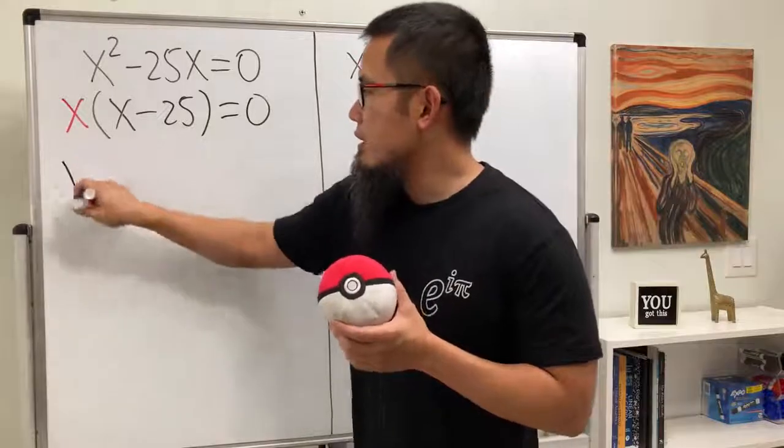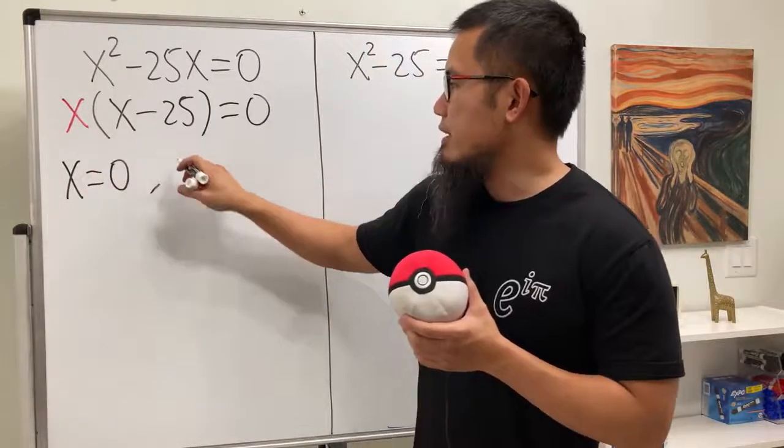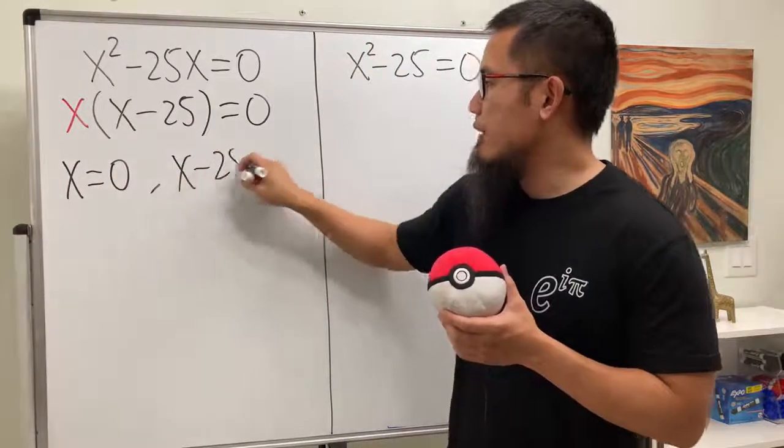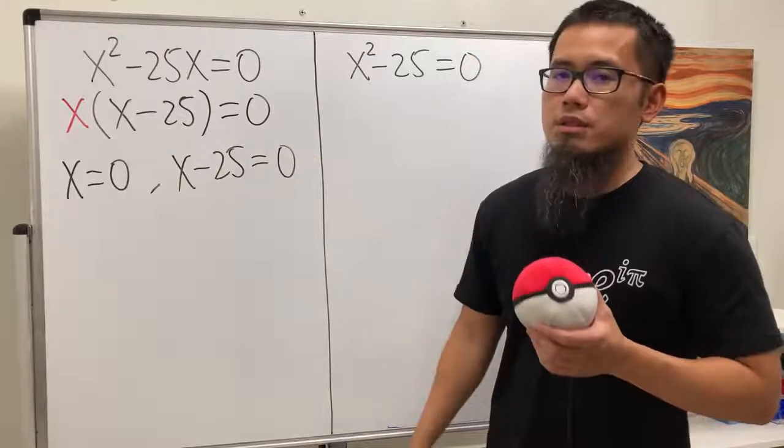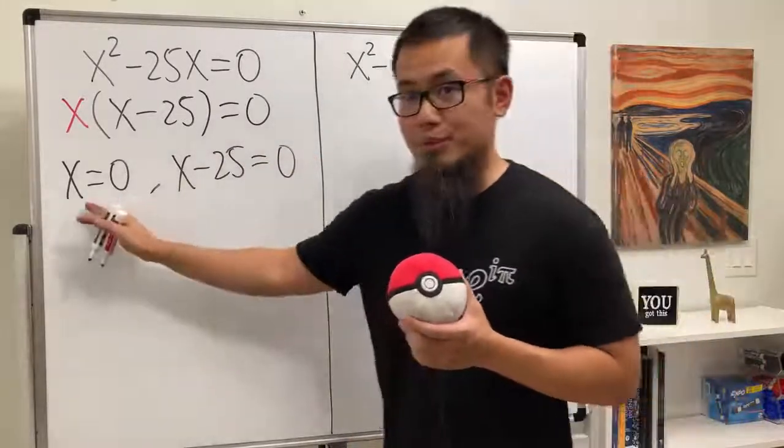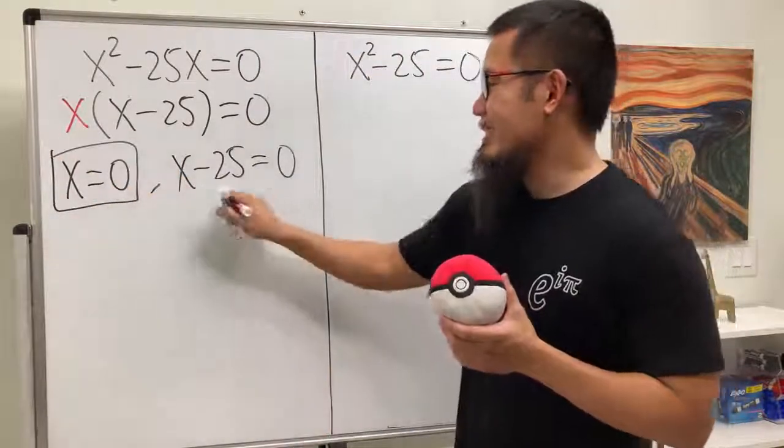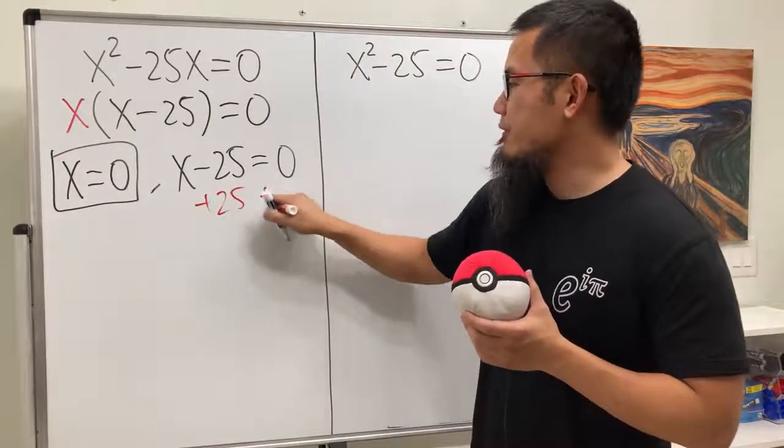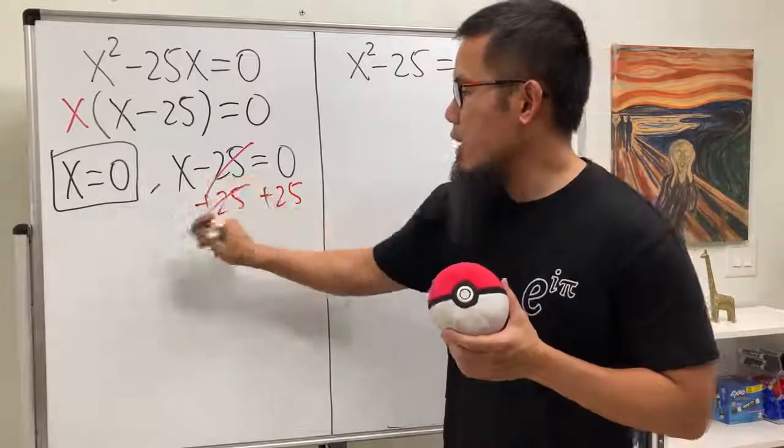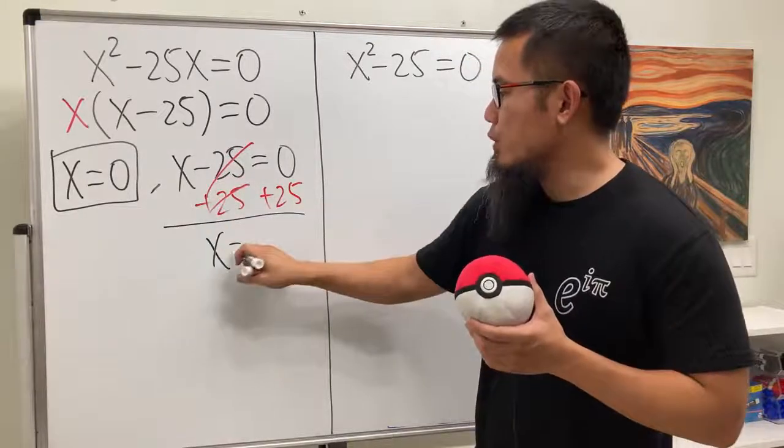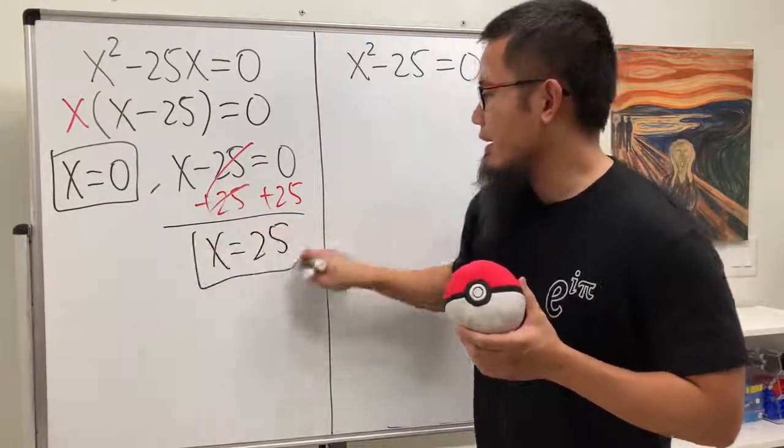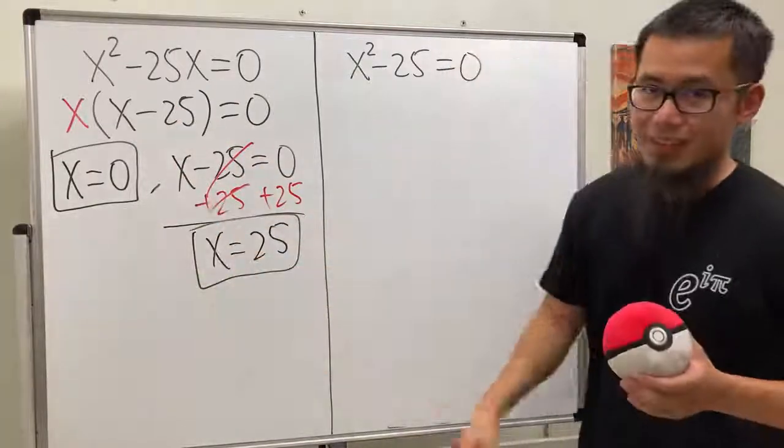And then we can just put this factor to be 0, and then the second factor, x minus 25, also make it equal 0. This right here is actually done already. This is the first answer, and for the second answer, we can just add 25 on both sides. So that way, we can see x is equal to 25. Alright, so for this question, we have these two answers, and we're done.